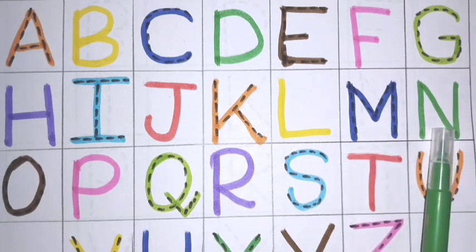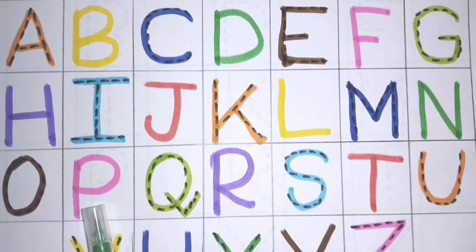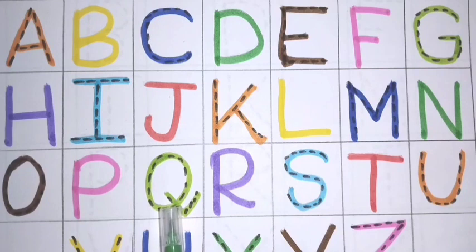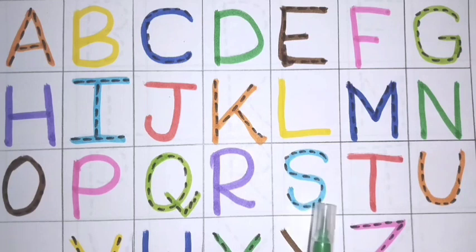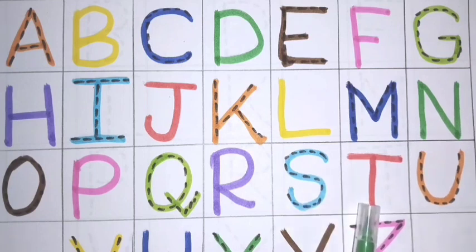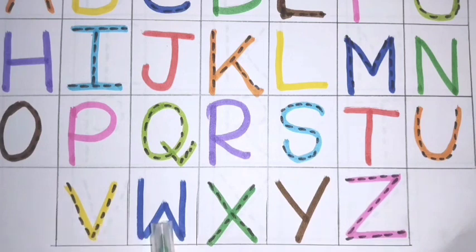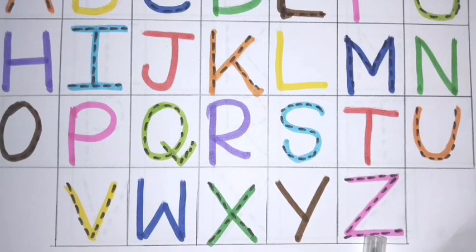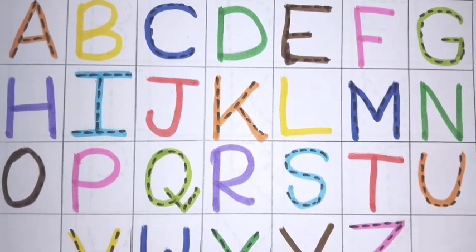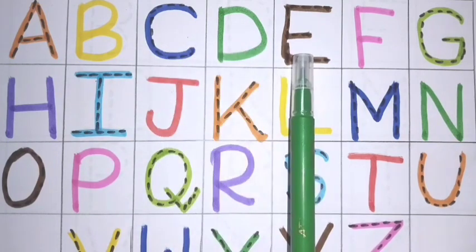N, N for nose. O, O for onion. P for pig. Q, Q for queen. R, R for rose. S, S for sunlight. T, T for tie. U, U for uniform. V, V for van. W, W for watch. X, X for x-ray. Y, Y for yellow. Z, Z for zebra. A, B, C, D, E, F.